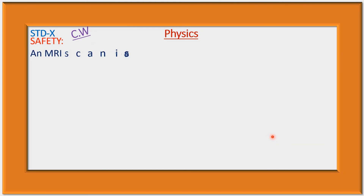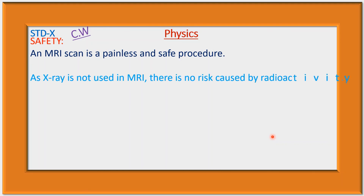An MRI scan is a painless and safe procedure. Since X-rays are not used in MRI, there is no risk caused by radioactivity. While even small amounts of radiation carry some risk in CT scanning, in MRI there is no use of radioactivity or X-rays, making it safe.